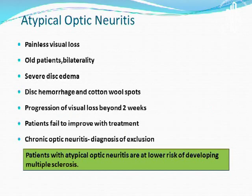Atypical optic neuritis is characterized by painless visual loss, older patients with bilaterality, severe disc edema, hemorrhages and spinal cord involvement, progression of visual loss beyond two weeks, and a failure to improve on treatment. Patients with atypical optic neuritis are at a lower risk of developing multiple sclerosis.